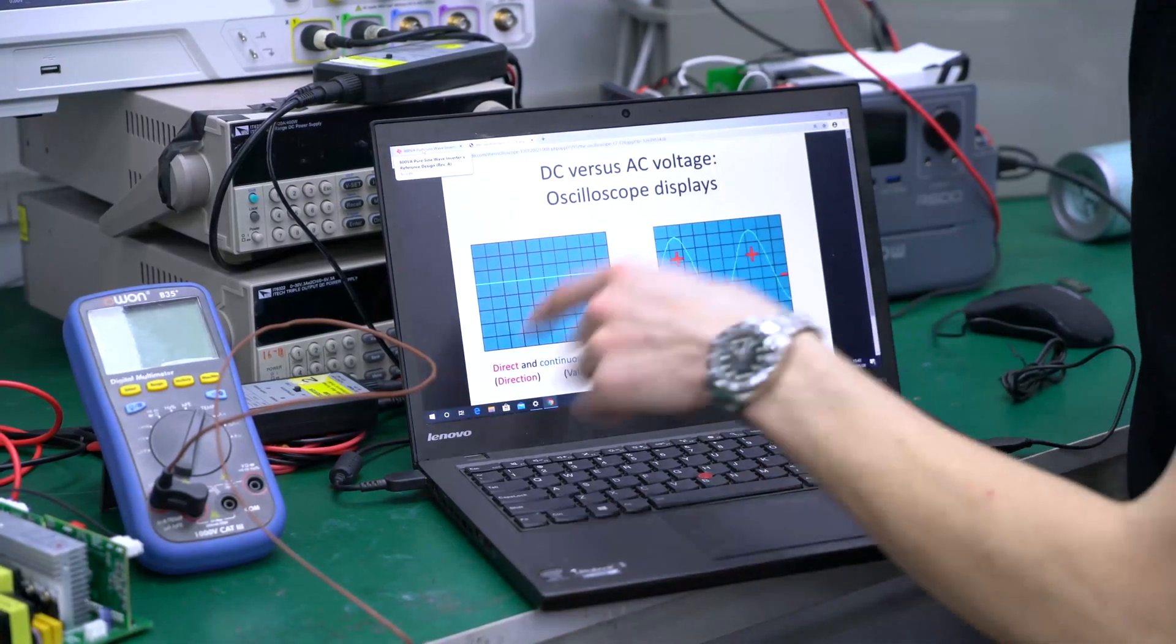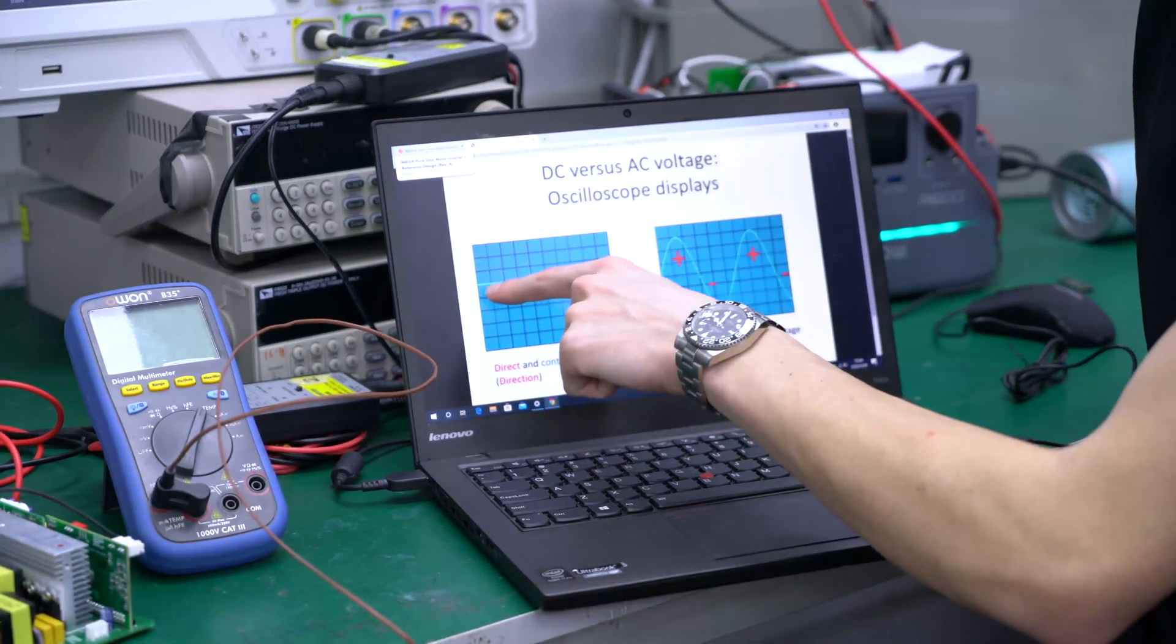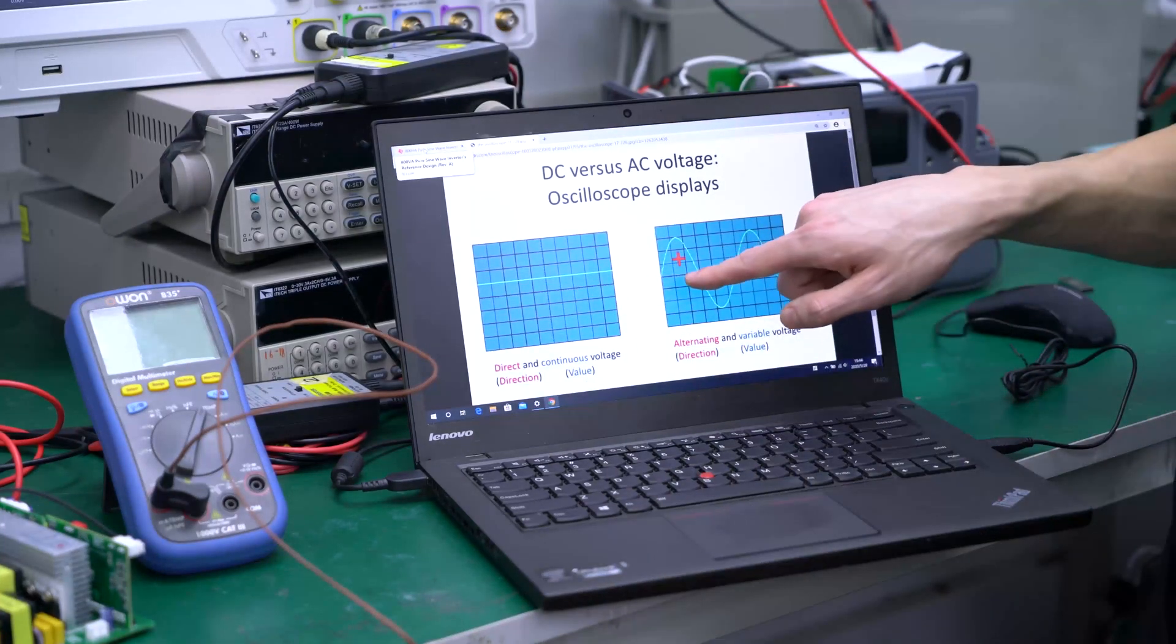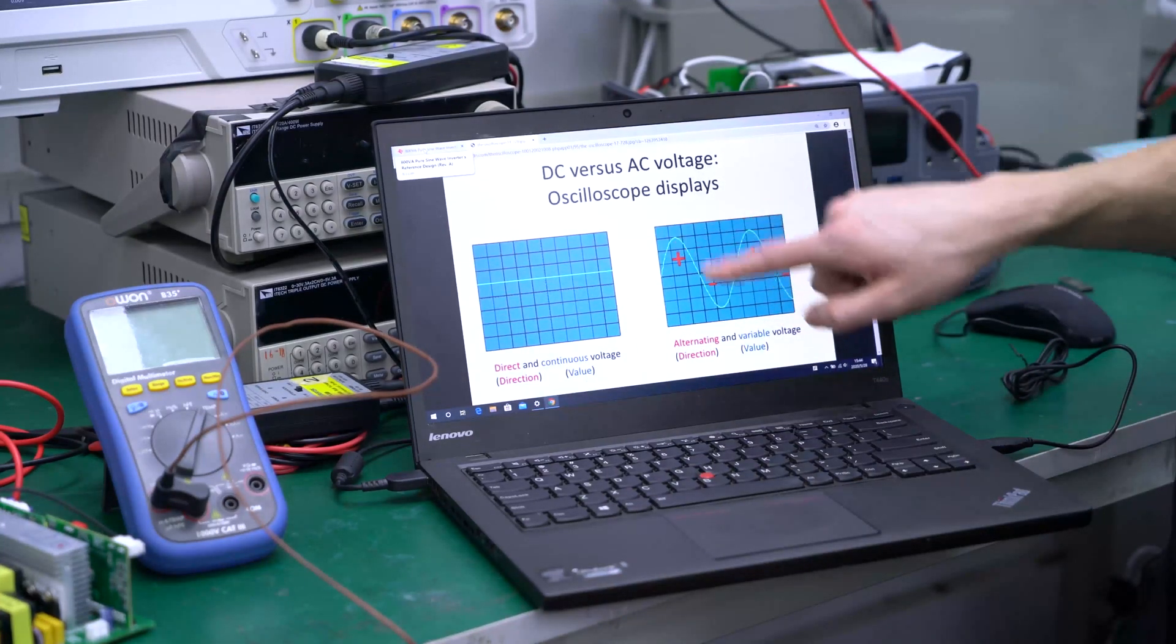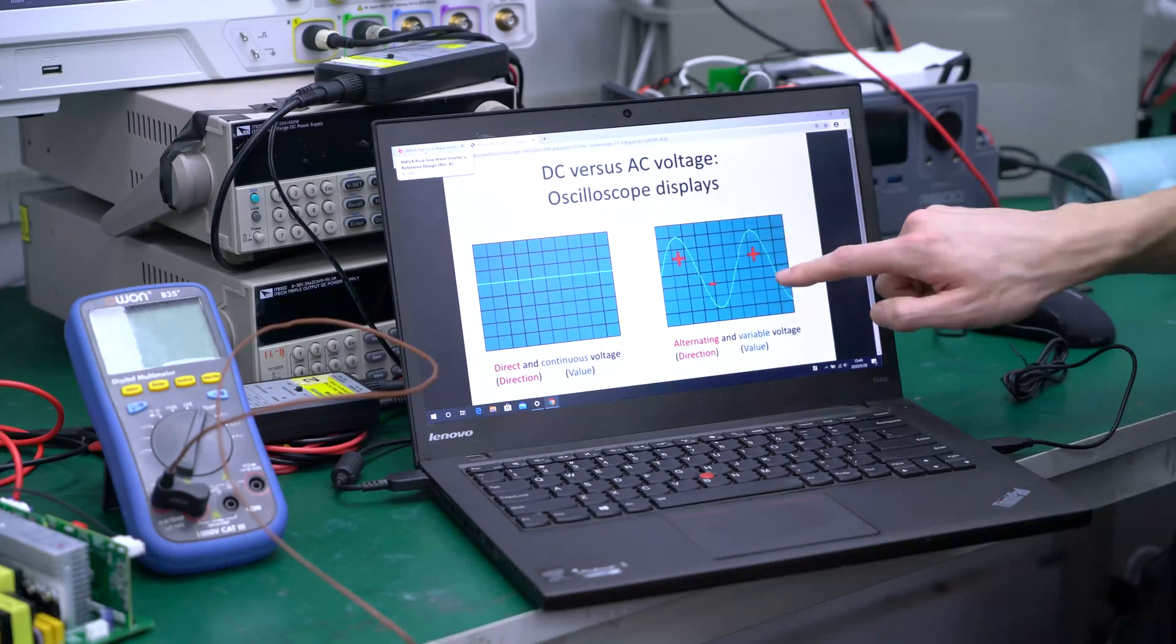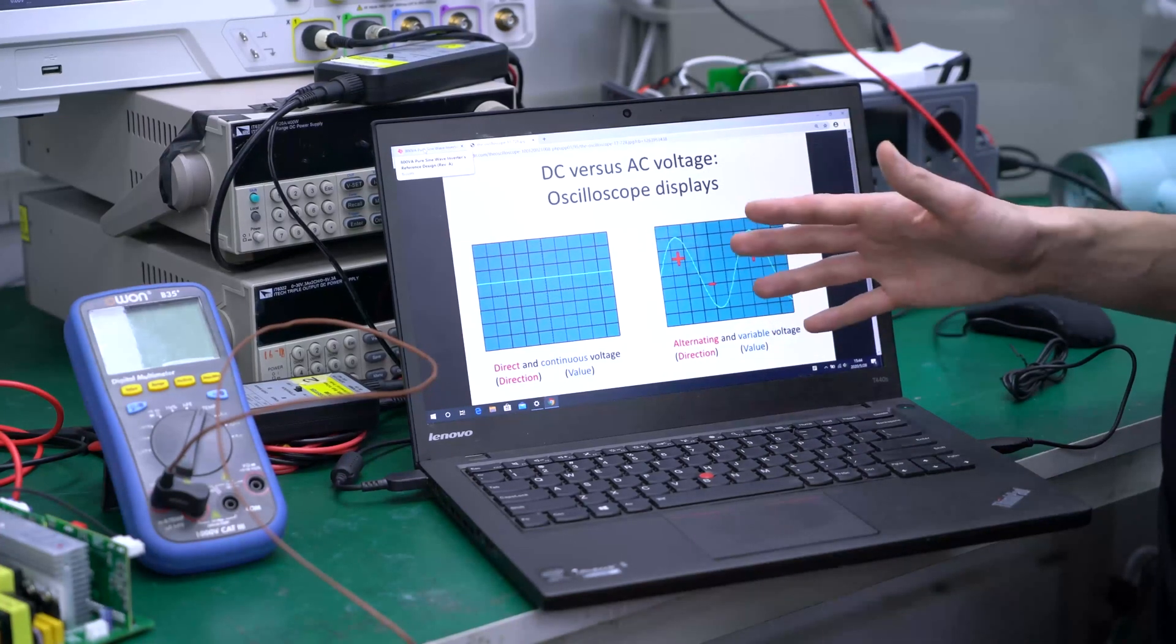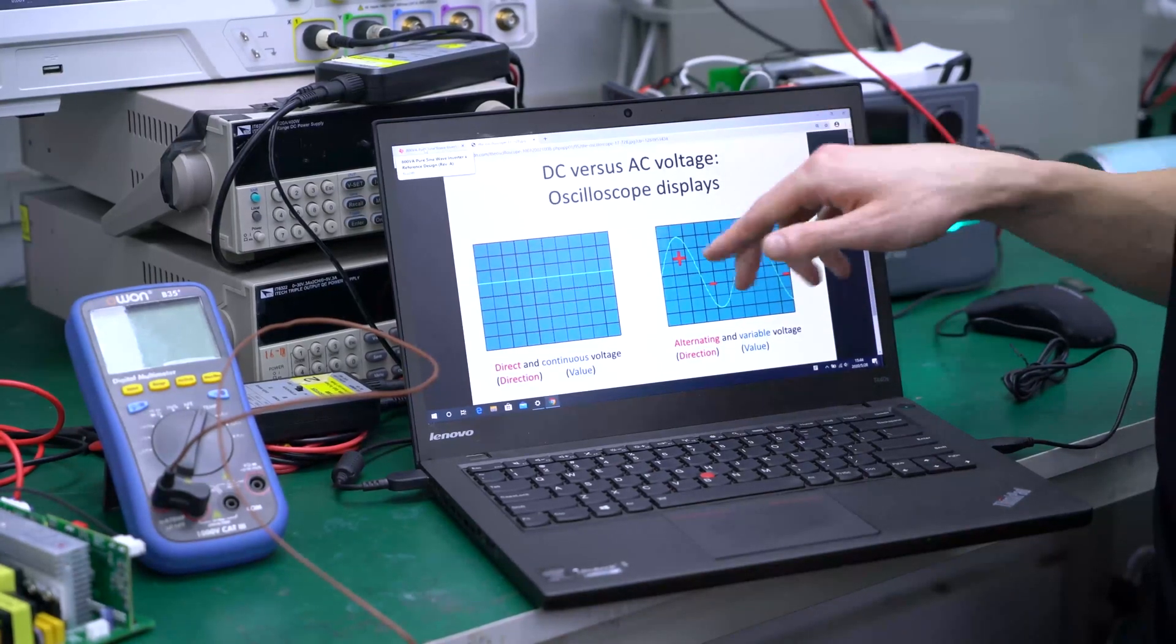Let's take a look at DC versus AC. DC stands for direct current, and as you can see here by the straight line, this is a direct and continuous voltage. Now AC stands for alternating current. As you can see here by this waveform, this is an alternating and variable voltage. Now, anything that requires an AC input, which is basically everything in a home, cannot work with a DC input.